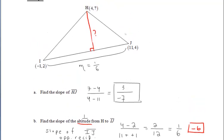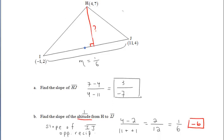Now let's take a look at part C. Now we want to find the slope of the median to IJ. So the difference between the median and altitude,